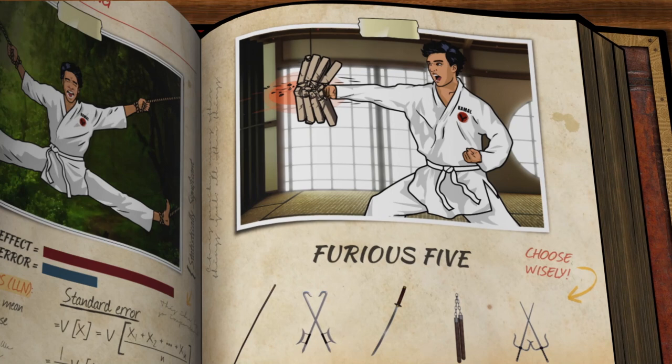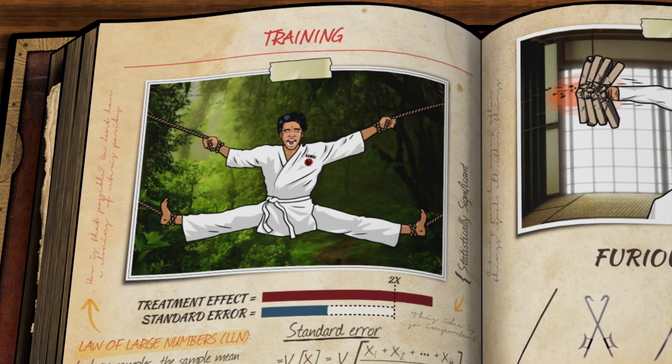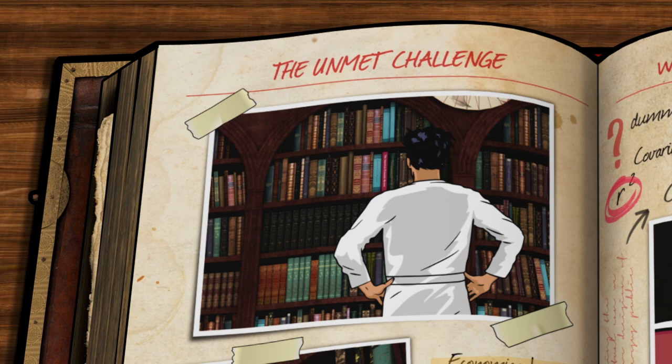On his quest to master econometrics, Grasshopper Kamal has made great progress, stretching his capabilities and outsmarting his foes.